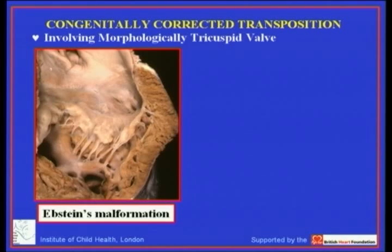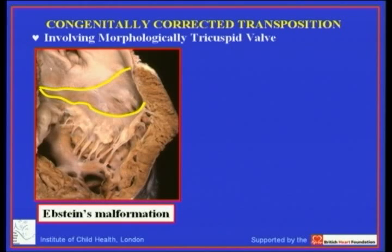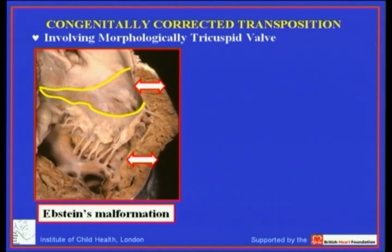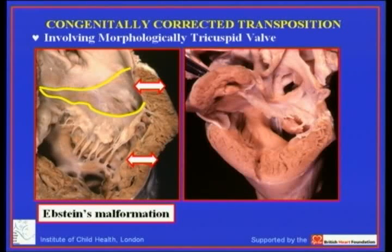Here is Ebstein's malformation of the left-sided morphologically tricuspid valve. Looking at a close-up of the left atrioventricular junction, the tricuspid valve is not tethered at the atrioventricular junction but is displaced apically. Unlike Ebstein's in the normal heart with concordant atrioventricular connections, it is unusual in congenitally corrected transposition for there to be thinning or atrialization of the inlet part of the right ventricular myocardium; the inlet myocardium typically retains its thickness.